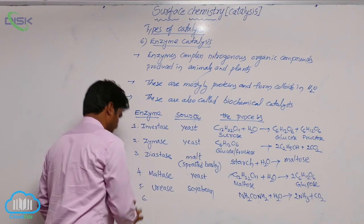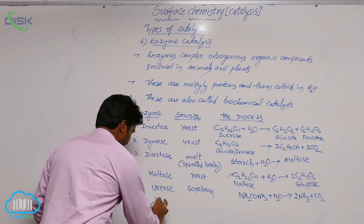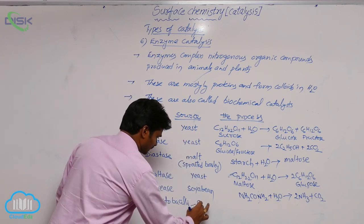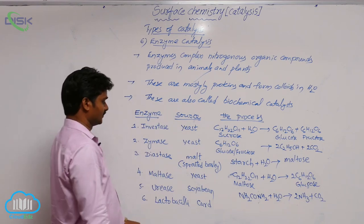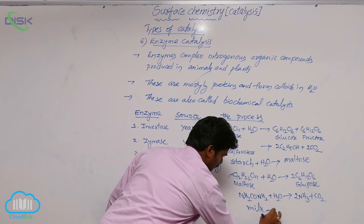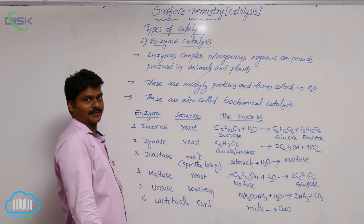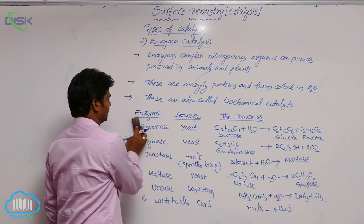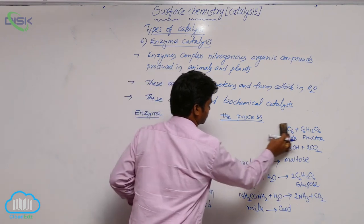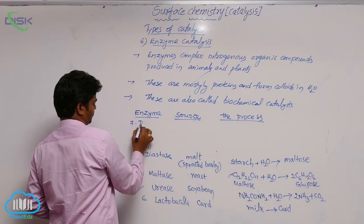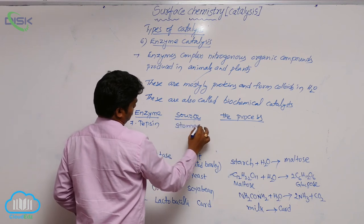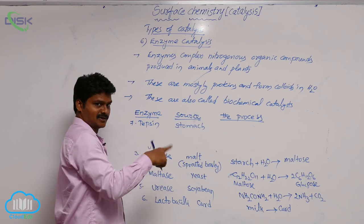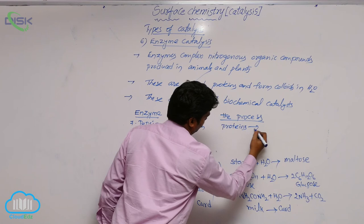The sixth enzyme is lactobacilli, present in curd. It converts milk into curd. There is also an enzyme called pepsin, sourced from the stomach, which converts proteins into polypeptides.